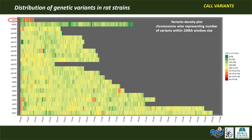On this variant density plot, you can see red and orange spots indicating genome locations with a high number of variant accumulations, particularly on chromosome Y, which in the Brown Norway rat is difficult to properly assemble. So we do not yet have a high-quality reference chromosome Y for rat.